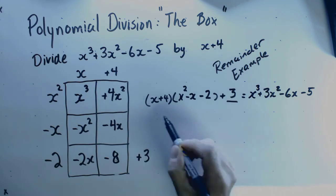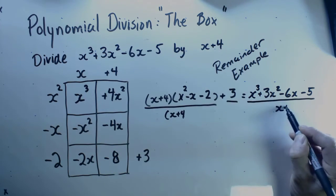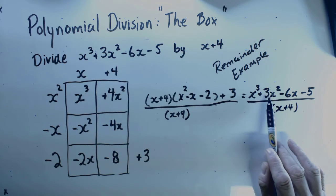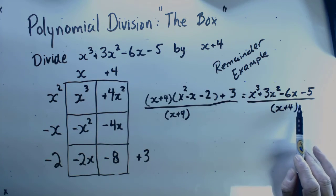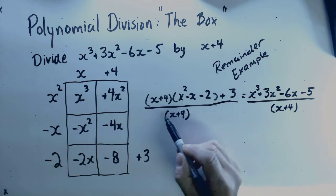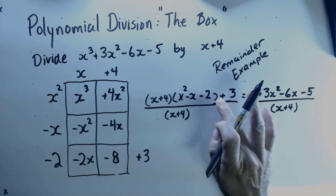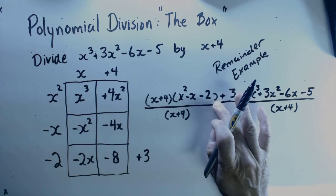Another way of looking at this is that (x³ + 3x² - 6x - 5) / (x + 4) is equal to this expression. I can simplify this a little bit, so I'm going to break this here.